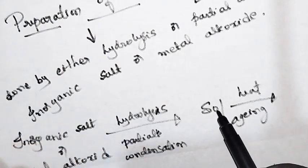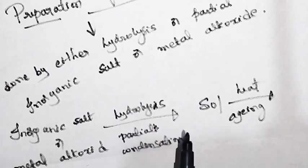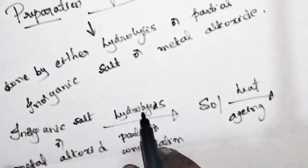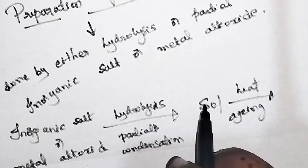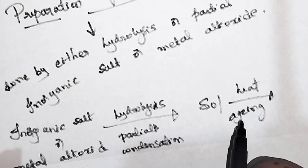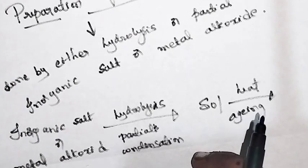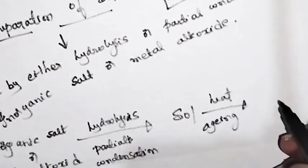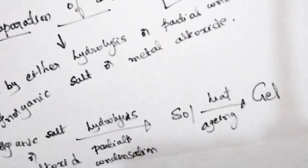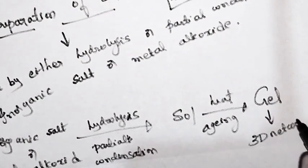Heating the sol causes the water content present in it to evaporate. The water comes from the hydrolysis or partial condensation step, where water is added as the dispersion medium. Aging means keeping the sol undisturbed for several days, during which dehydration also occurs — removal of water or solvent takes place. After heating or aging, you end up with the gel, which has a three-dimensional network structure.